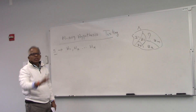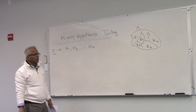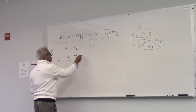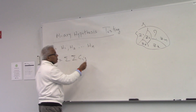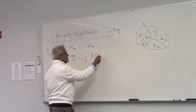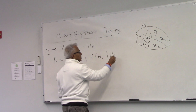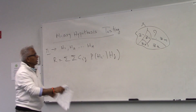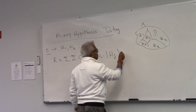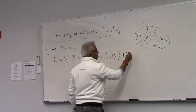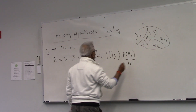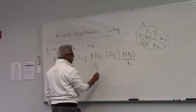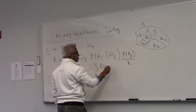You do it in such a way that the overall cost is minimized. The cost is going to be a double summation: Cij, where Cij is the cost associated with deciding in favor of Hi when Hj is true, multiplied by the probability of Hj — which I'll denote Pj — multiplied by the probability of deciding in favor of Hi when Hj is true.